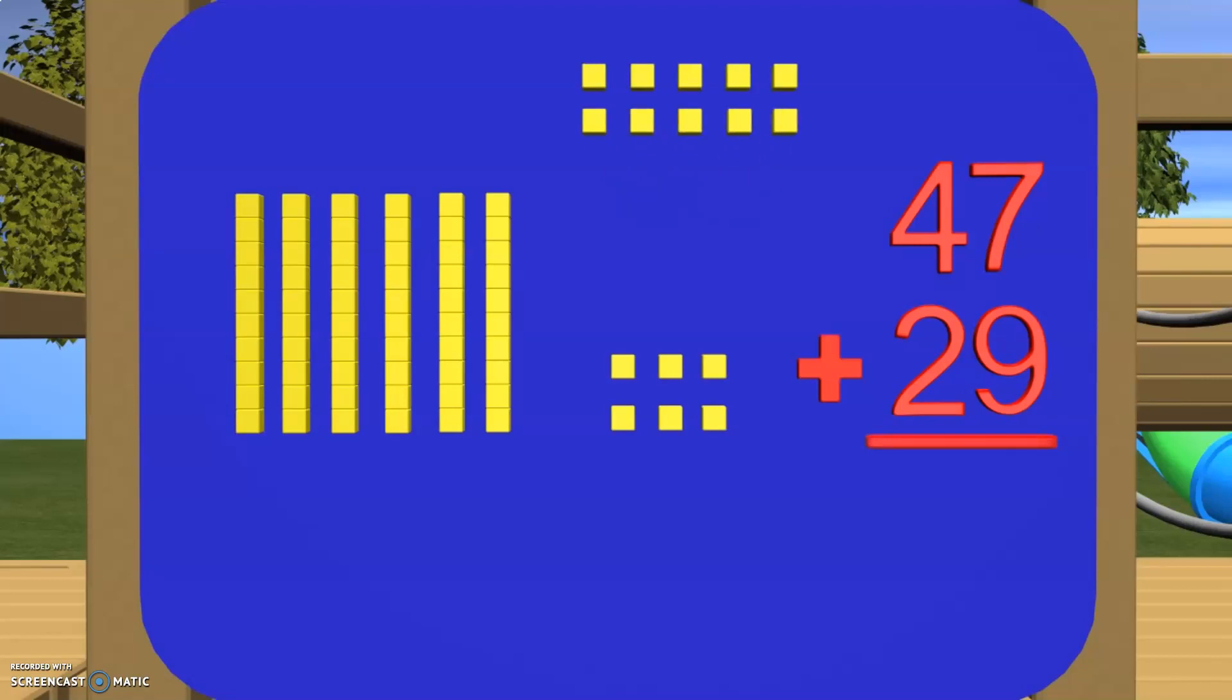Now we need to stop here and remember what we learned about regrouping. We now have 10 ones, which is the same as one of our 10 blocks. We need to trade these in for a tens block. Remember, we can do this because 10 ones are the same as one of these 10 blocks.